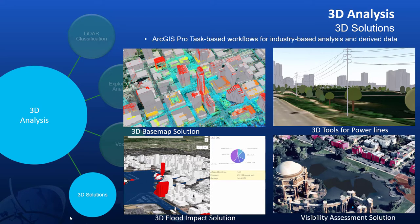One of the pieces with 3D analysis to make you aware of are solutions that utilize our geoprocessing services and Point CNN learning modules, delivering task-based workflows for industry-based scenarios. The 3D basemap solution uses building footprints and LiDAR data to accurately derive roof forms and 3D objects of buildings, as well as create vegetation and elevation services — providing a solid 3D base map for producing experiences.